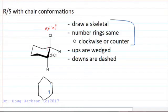At position two, this is an axial down, so that means the chlorine is an equatorial up. Well, ups are wedged as well, so this compound is actually meso because of the plane of symmetry we have here.